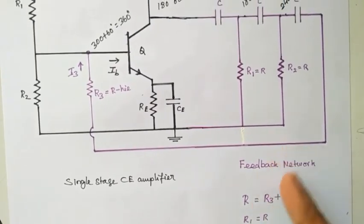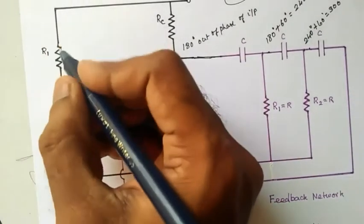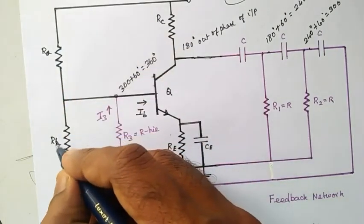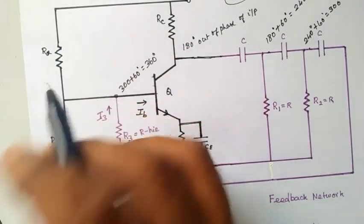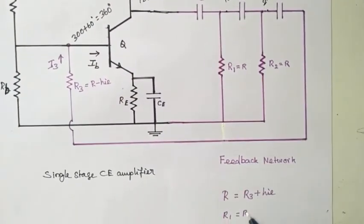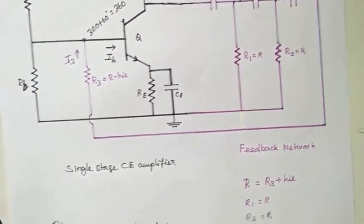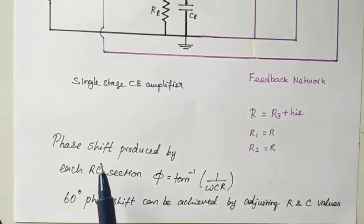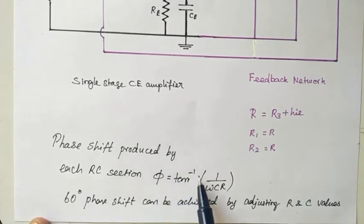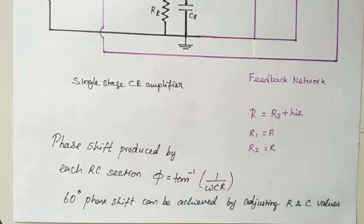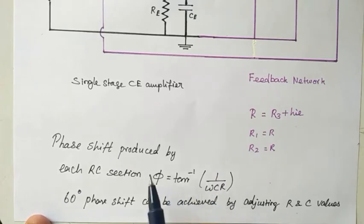R1 and R2 here refer to the feedback network resistors — don't confuse these; I can rename them as RA and RB. The biasing resistors are separate, don't be concerned about those. We are assigning these values to the feedback network resistors. Also, we have to consider that the phase shift produced by each RC section should equal φ = tan⁻¹(1 / ωCR). To fix the 60-degree phase shift in each RC network, we select the particular values of either C or R using this calculation.